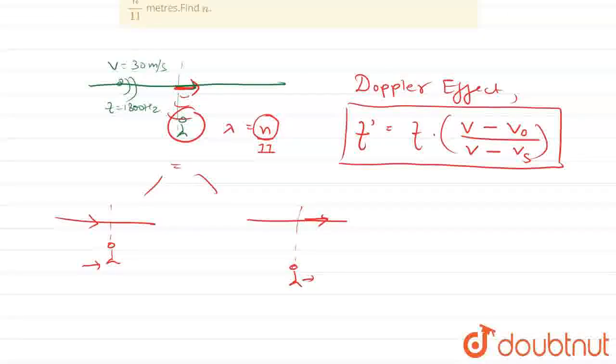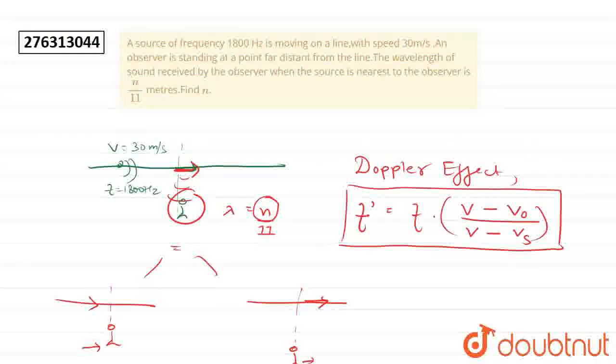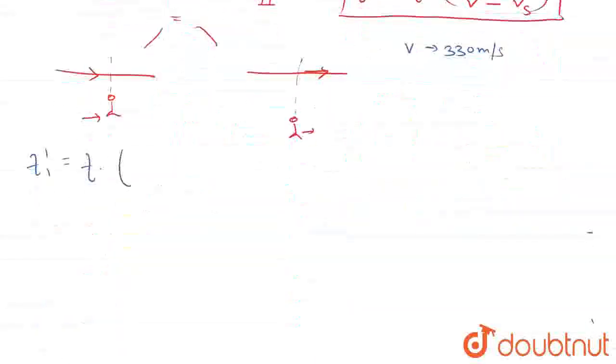for the first part, f1 dash is equal to f into v of sound in air. We assume 330 meters per second as v of sound in air. So,